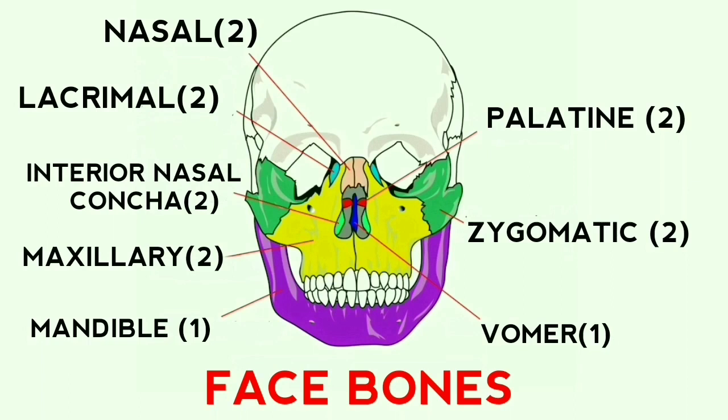There remains one more face bone. If you look at the dark blue color, it is the vomer, which forms the lower and back part of the nasal septum — the inner partition of the nasal cavity.